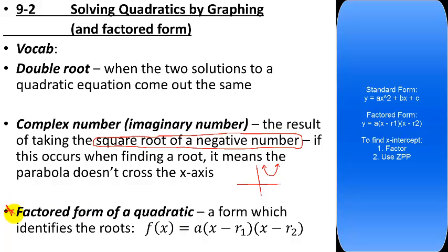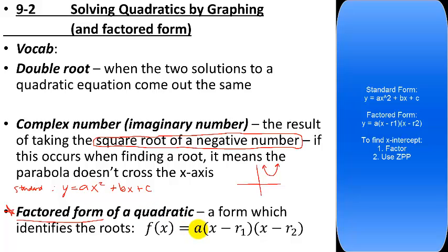Next vocab word: factored form. We already learned standard form — y equals ax² plus bx plus c. Quadratic form can be written in standard or factored form, and there's a third form we'll learn later. Factored form is y equals a times (x minus r1) times (x minus r2), where a is the same leading coefficient as in standard form. The trinomial quadratic, after factoring, gives you two sets of parentheses.